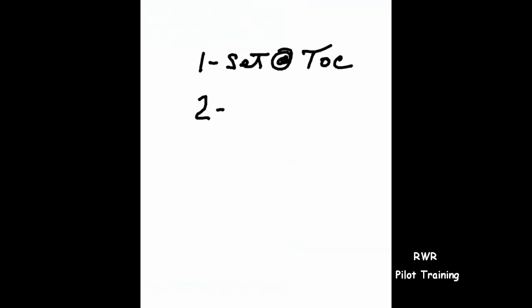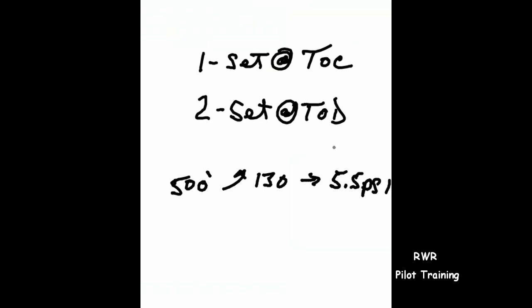And you set it again at the top of the descent. What does this mean? This means that all throughout the climb, you're maintaining a 500 foot cabin all the way up to 13,000 feet. Beyond that, the cabin pressure is 5.5 PSI and that's all it's going to get you. The cabin will climb at the rate of the aircraft. Once you set it at the top of the climb, you're not going to touch it again until the top of the descent.